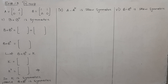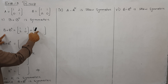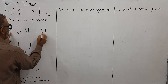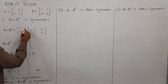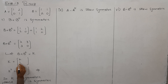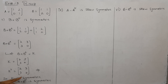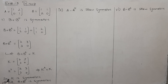اب ہم بڑھتے ہیں C part کی طرف: B plus B^T is symmetric۔ یہاں B ہے 1 2, 1 0۔ اس کا transpose: first row first column، second row second column۔ ان کو add کر لیں: 1+1=2, 2+1=3, 1+2=3, 0+0=0۔ اس کا نام K رکھ لیتے ہیں۔ K کا transpose لیں تو پہلی row پہلا column بنے گا، دوسری row دوسرا column — اور K ہی واپس آتا ہے، so K is symmetric۔